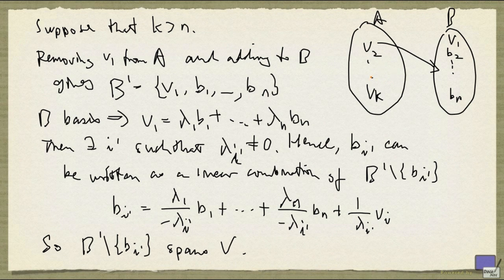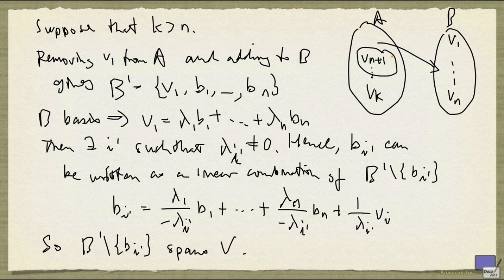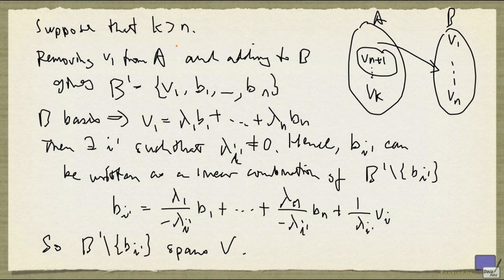So the claim is, you can keep moving vectors from A to B, and each time you can take out a B vector so that the resulting set still spans V. Because A has more vectors than B, eventually there will be no more B vectors in this set. In that case, we are left with vectors Vn+1 up to Vk still to be added, but no B vectors remain. That means V1 up to Vn already span V, so in particular Vn+1 can be written as a linear combination of V1 up to Vn. But that's not possible, because A is a linearly independent set. So that's a contradiction, which proves the claim: k could not be bigger than n.